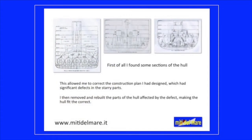First of all, the book contained some sections of the hull. This allowed me to correct the construction plan I had designed, which had significant defects in the stern parts. I then removed and rebuilt the parts of the hull affected by the defect, making the hull fit the correct form.